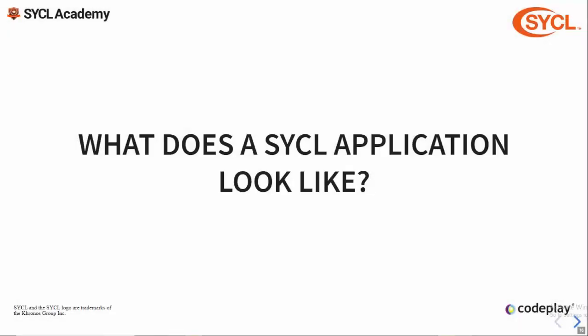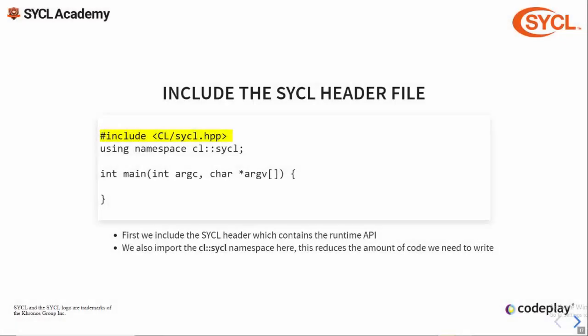Now we're going to look at what a typical SYCL application looks like. For this we're going to look at how to create a simple vector add application. We're only going to touch on these concepts to give you an idea of how everything fits together, because we'll dive much further into these in later lectures. The first thing to do, like any library, is to include the header file. For SYCL this is sycl.hpp, which includes the entire SYCL API — everything you need to develop a SYCL application. We also import the cl::sycl namespace here to reduce verbosity in the slide code.